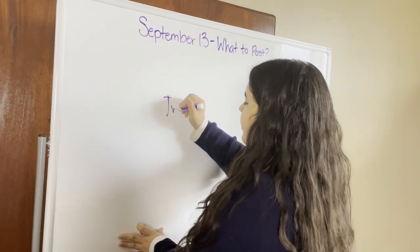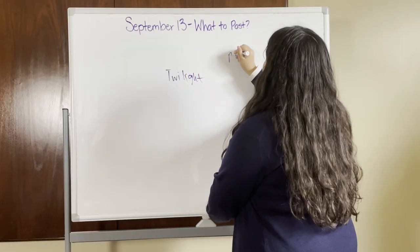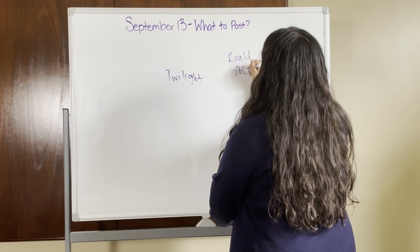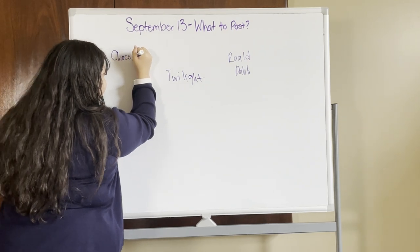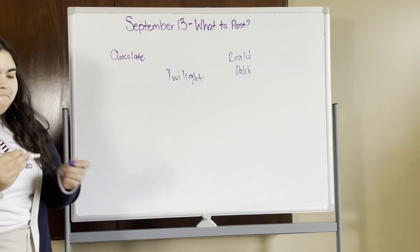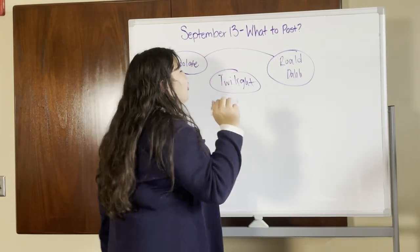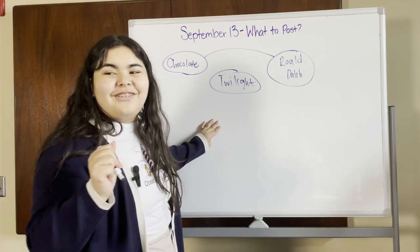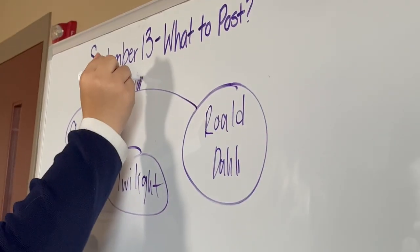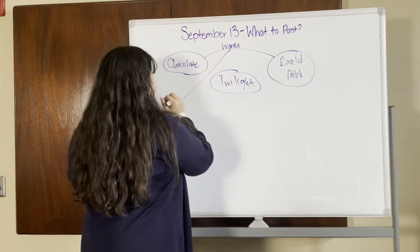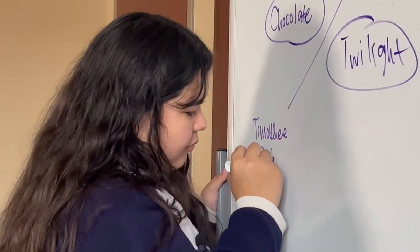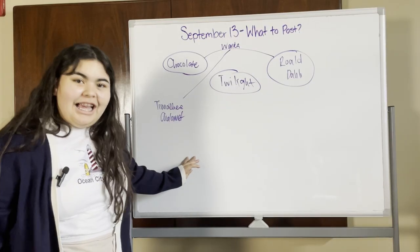So we have Twilight, Roald Dahl. How do these connect? Because Roald Dahl has a movie, Willy Wonka and the Chocolate Factory. One that you may know by the name Wonka. Wonka, the movie with Timothée Chalamet in it.